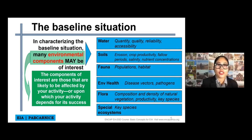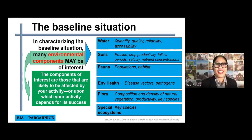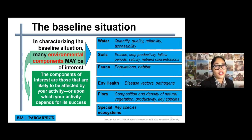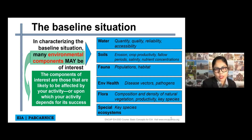Examples of environmental components include water — its quantity, quality, reliability, and accessibility. Another component is soil — its erosion, crop productivity, fallow periods, salinity, and nutrient concentrations. We also have fauna, which focuses on populations and habitats; environmental health, like disease vectors and pathogens; flora, like composition and density of natural vegetation, productivity, and key species; and special ecosystems composed of key species.